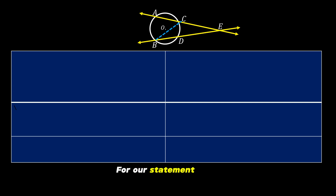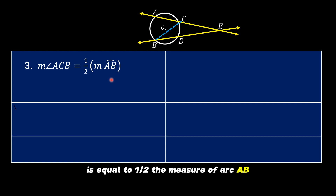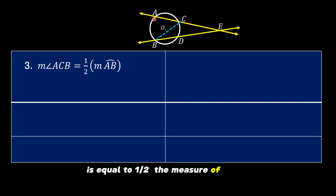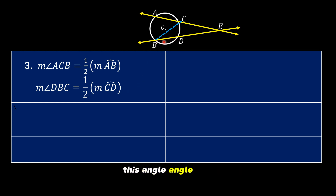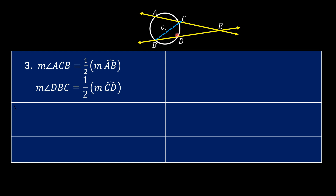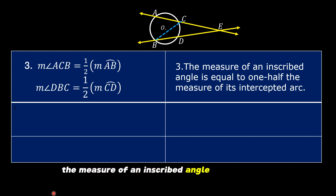For statement number three, we have: the measure of angle ACB is equal to one-half the measure of arc AB, and the measure of angle DBC is equal to one-half the measure of arc CD. The reason is: the measure of an inscribed angle is equal to one-half the measure of its intercepted arc.